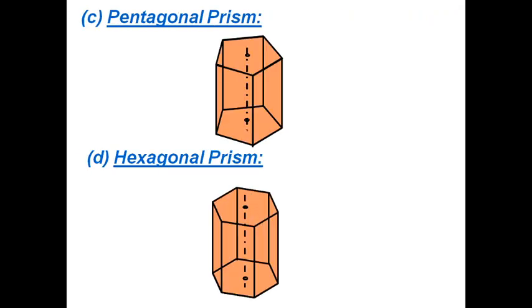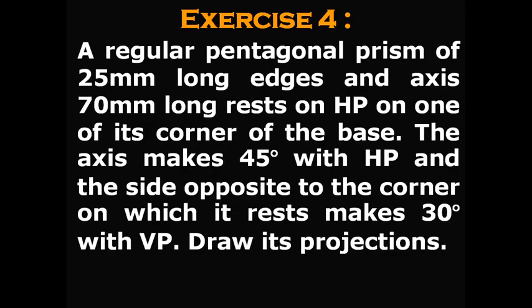I will be talking to you today on pentagonal prism. I am taking a very basic example wherein a pentagonal prism of 25mm long edges and axis 70mm long rests on HP on one of its corners of the base. The axis makes 45 degrees with HP and the side opposite to the corner on which it rests makes 30 degrees with VP. We need to draw its projections.